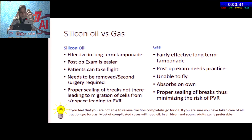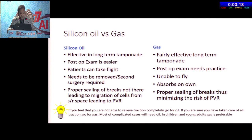Another controversy is silicone oil versus gas. For silicone oil, it gives effective long-term tamponade, post-op exam is easier, and patients can fly immediately after surgery. But it needs to be removed — a second surgery is required. Proper sealing of breaks is not as good as gas, which leads to migration of cells and more chances of PVR.